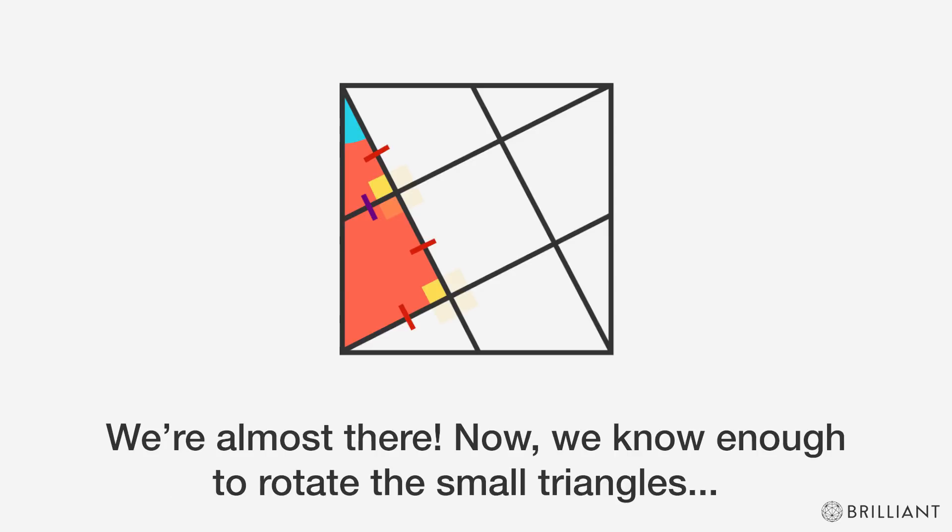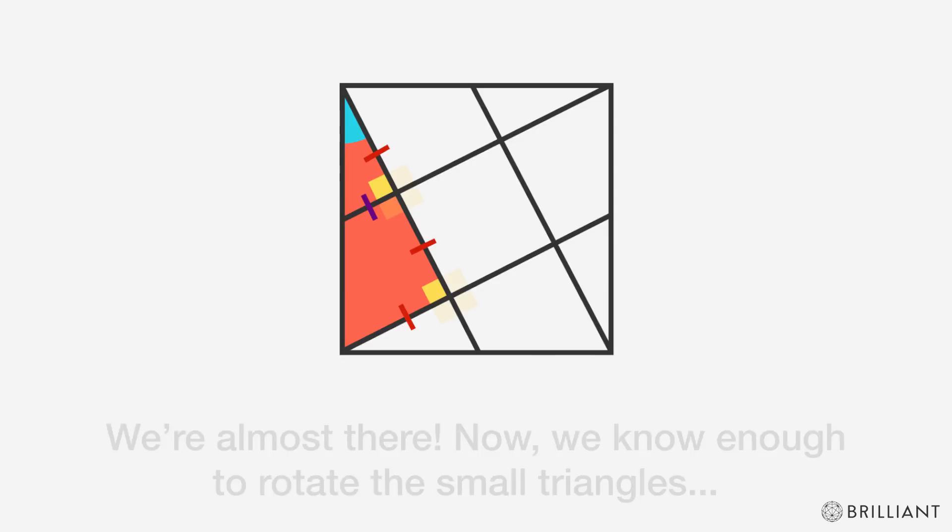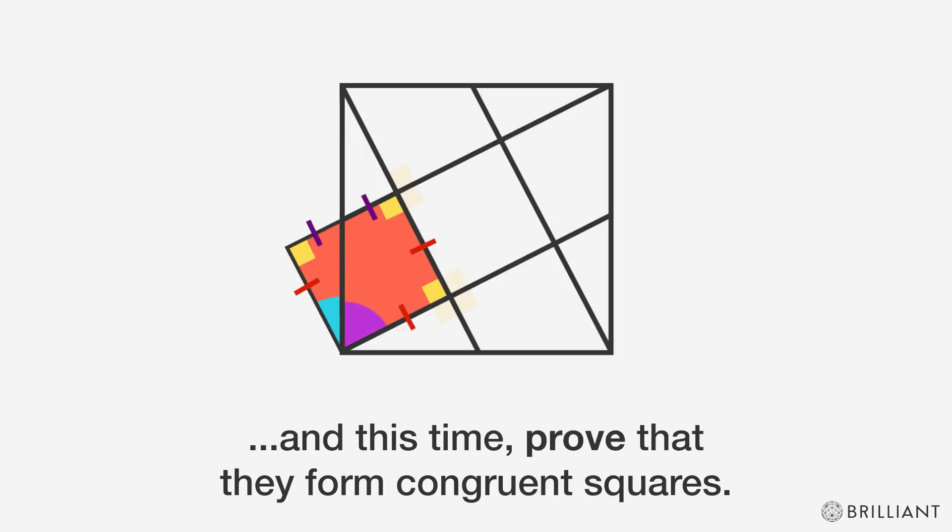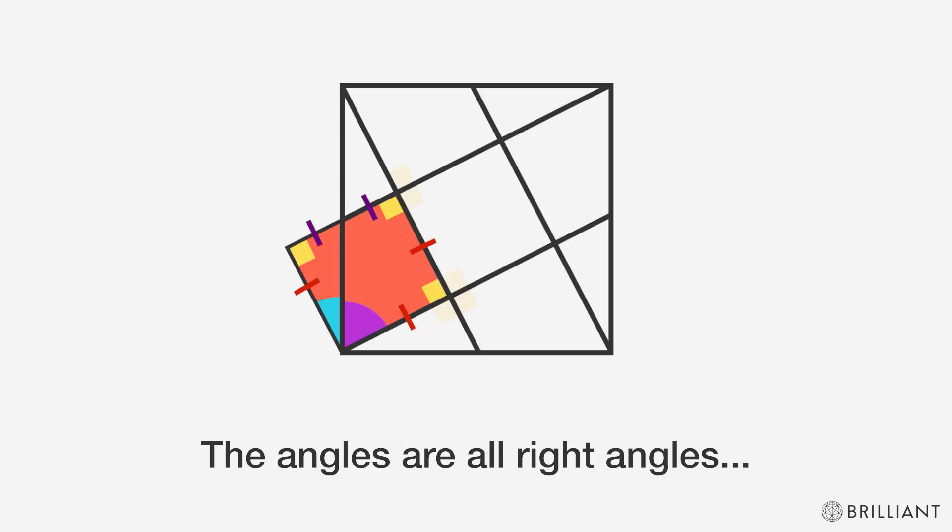We're almost there. Now we know enough to rotate the small triangles, and this time prove that they form congruent squares. The angles are all right angles, and the side lengths are all the same.